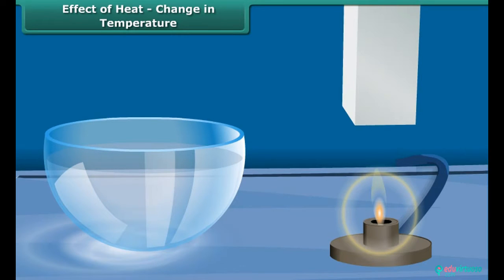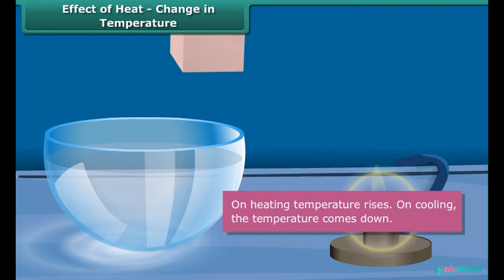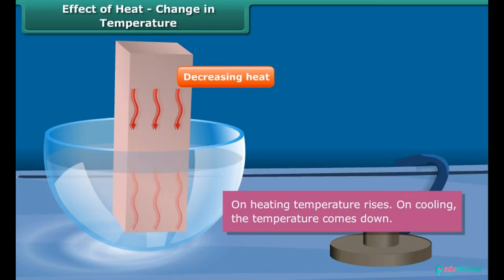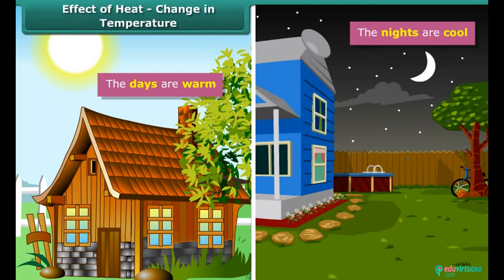We observe a change in temperature on heating. On heating, temperature rises and on cooling, the temperature comes down. In nature, the sun's energy brings about a change in temperature. The days are warm while the nights are cool. Summer is hot, winter is cold.